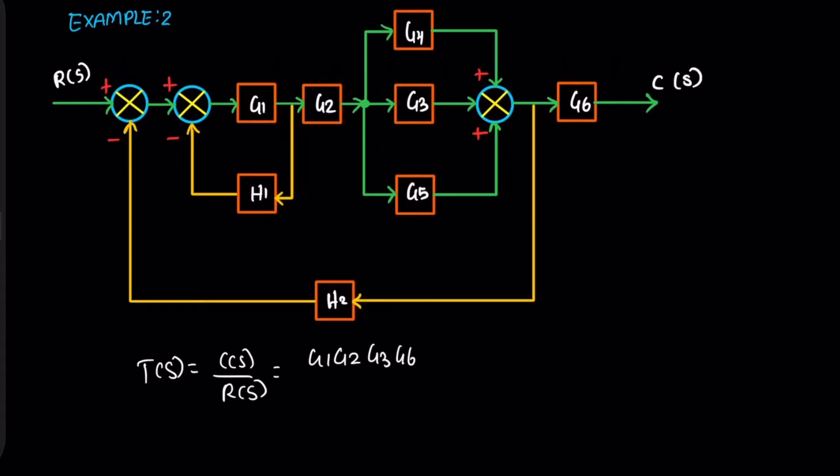Now path 2, moving this way. The path gain is G1, G2, G4, and G6.